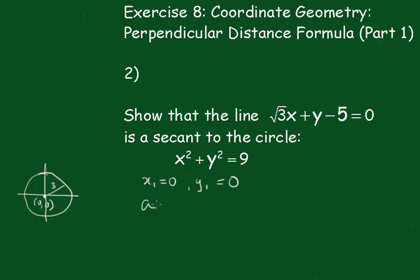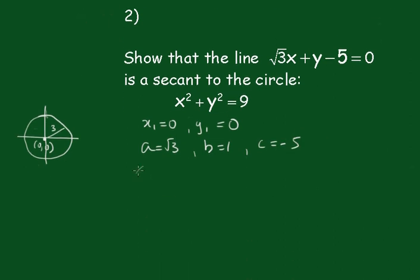So we'll write down what a is. a is root 3, b equals 1, and c equals -5. Writing out the formula, p equals the absolute value of ax1 plus by1 plus c, all over the square root of a squared plus b squared.